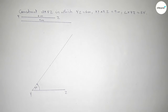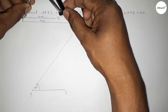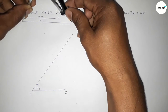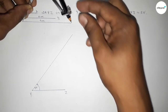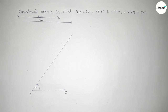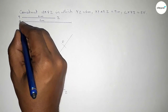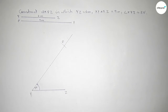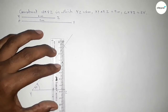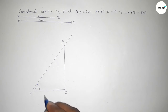Now taking the length 9 centimeter by using compass. So putting the compass here and taking the length 9 centimeter, and putting the compass on the point Y and cutting here. Taking here point P, so PY equals 9 centimeter.